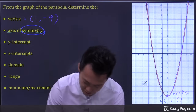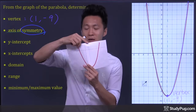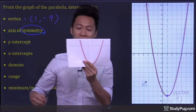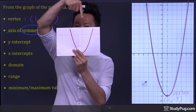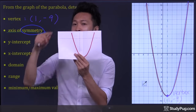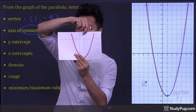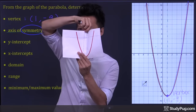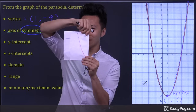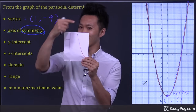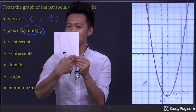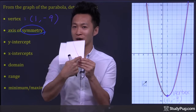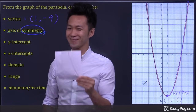Let me show you. Here we have a parabola just like this one, and the axis of symmetry runs down the middle of the parabola. Now I'm going to fold the graph along the axis of symmetry. Can you see that? The two halves of the parabola completely overlap each other. Cool.